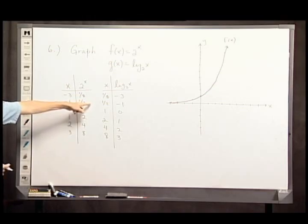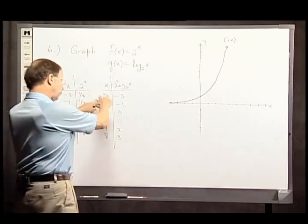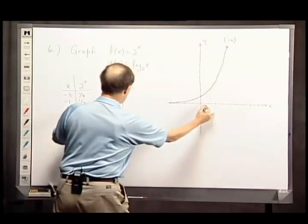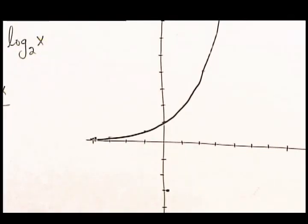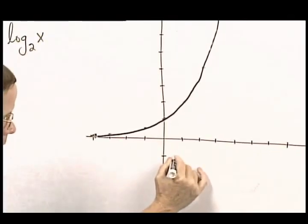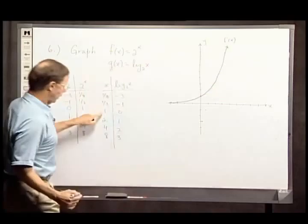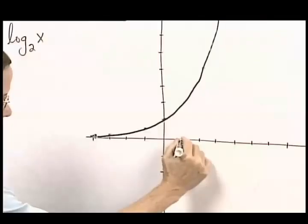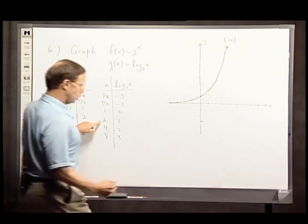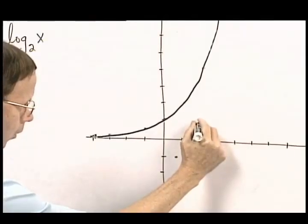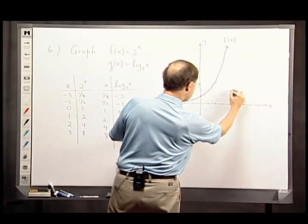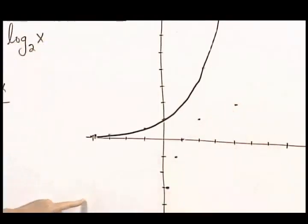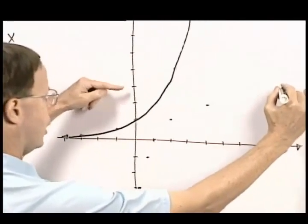How about the log function? Now, if x is 1 eighth, there I am. The y value is negative 3. Puts me down here. If x is 1 half, the y value is negative 1. If x is 1, y is 0. If x is 2, y is 1. If x is 4, y is 2. x is 8, y is 3. So, it puts me right about up there.